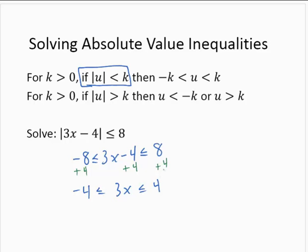I'm sorry — that should be 12. 8 plus 4 is 12. And now we'll divide by 3, dividing all three parts of the inequality by 3. So then we have negative 4 thirds is less than or equal to x is less than or equal to 4.